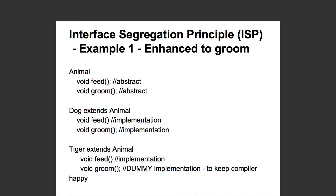What would happen is the dog and the tiger need to implement the groom method. Groom is something which should only be applicable to domestic animals. So, I can groom a dog, but for a tiger, I am providing a dummy implementation just to keep the compiler happy. Is that good implementation?